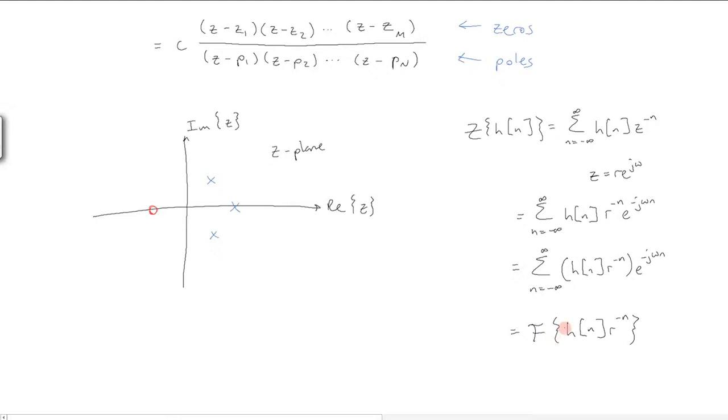Basically, there is a region of convergence in the Z-plane characterized by R, which tells us whether the Fourier transform exists and whether this whole function is stable.